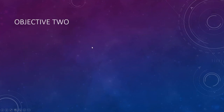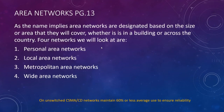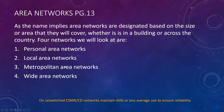Objective two: area networks. As the name implies, area networks are designated based on the size or area they cover: personal area, local area, metropolitan area, and wide area. We're going to look at four types — whether it's in a building, across the country, or in your office.